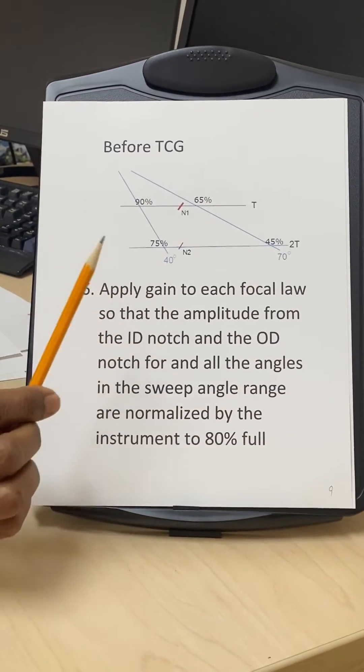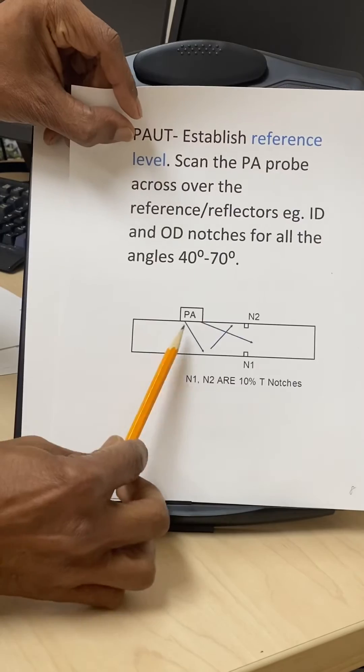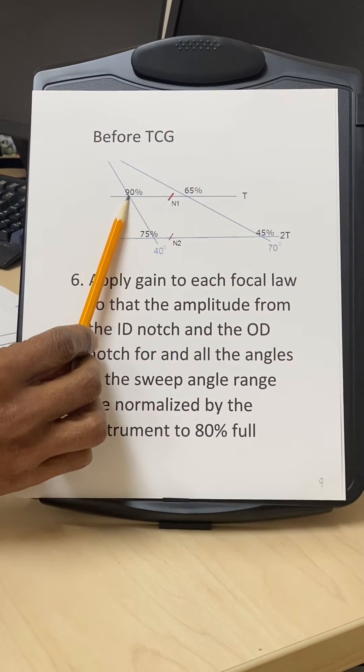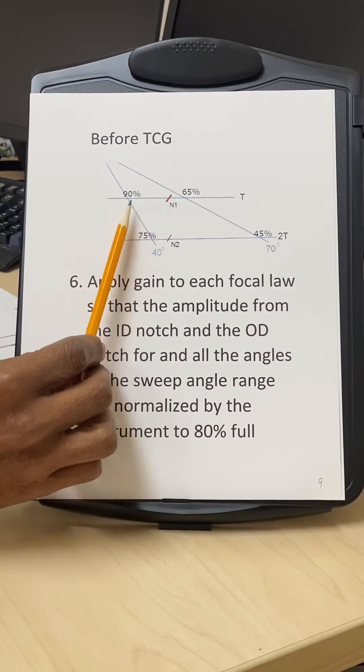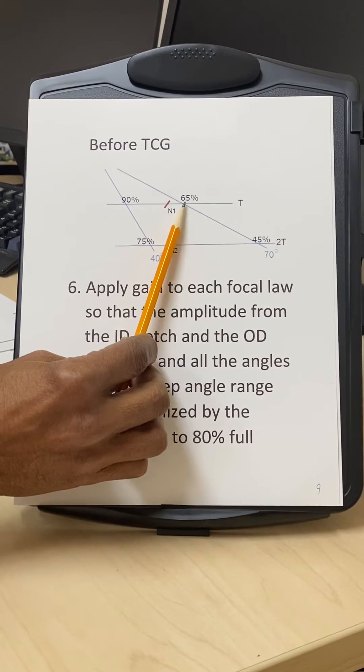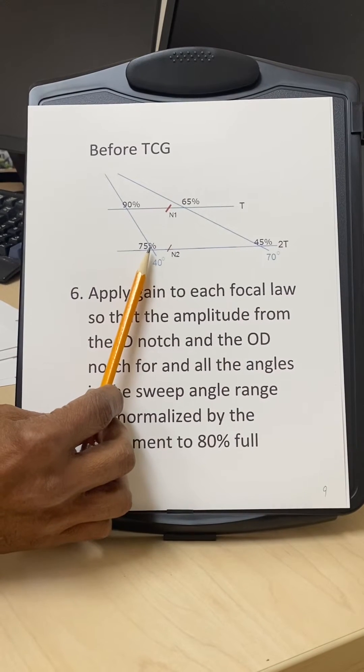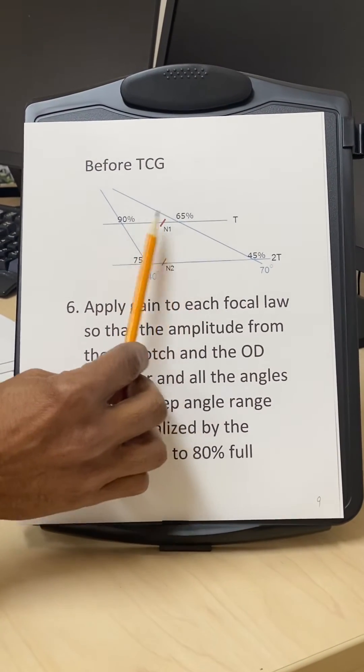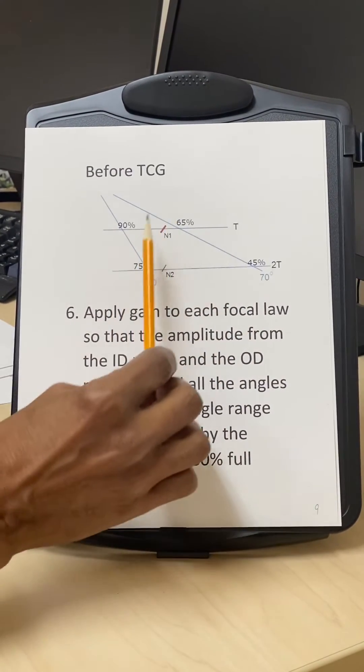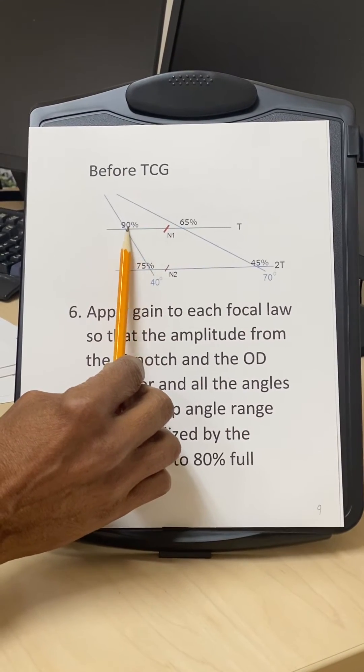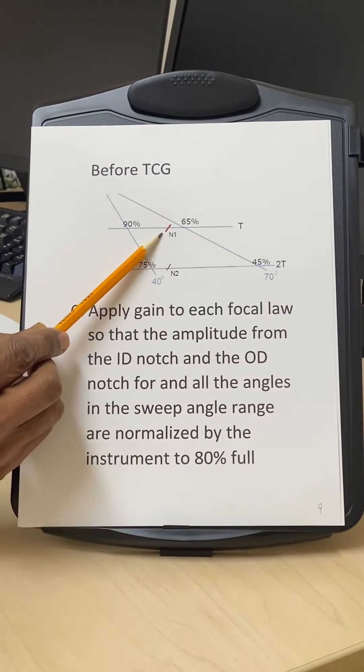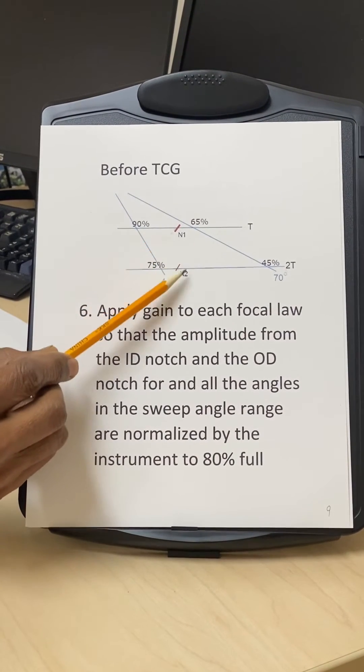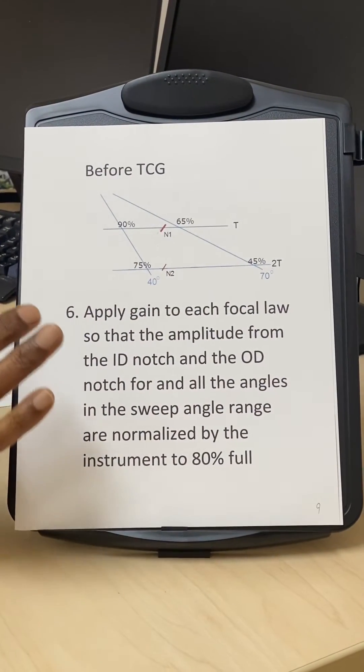When we move the PA probe over this surface and try to peak the signals, we get different results. Here we will get very high amplitude of the notch, about 90% to 100%. For higher angles, the amplitude will drop to maybe 60 or 65%. The signal will be lesser because of the change in sound path, the increasing sound path and angle. You will have different amplitudes of the reflected signal from notch N1 and N2. This notch N1 amplitude is higher than the amplitude from notch N2.